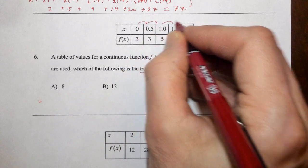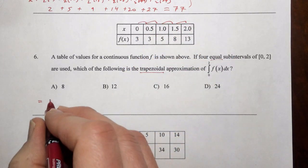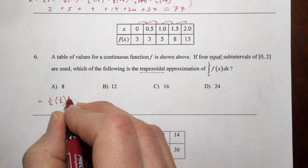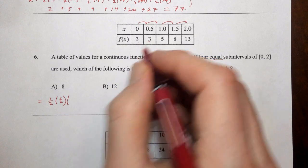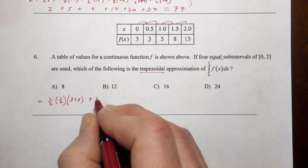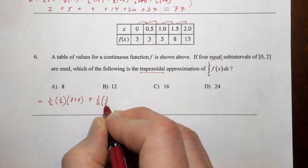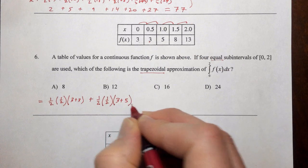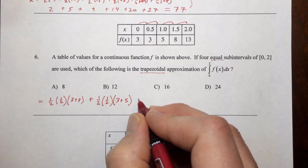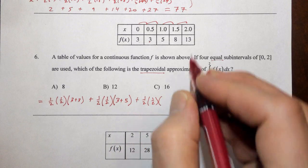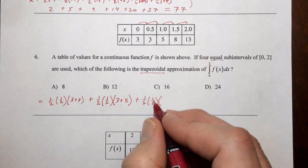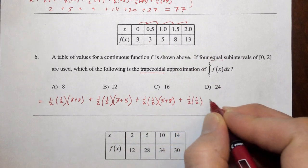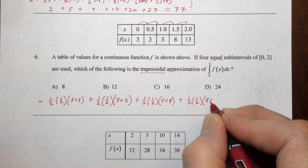So we're going with four equal subintervals. One, two, three, four. So we have one-half, and then the height will be a half, and the sum of the bases will be three plus three. And then we have a half, and the height is half, and the sum of the bases is three plus five. And then our next one is a half times a half, and this time it'll be five plus eight. And then finally, a half times a half, and eight plus thirteen.